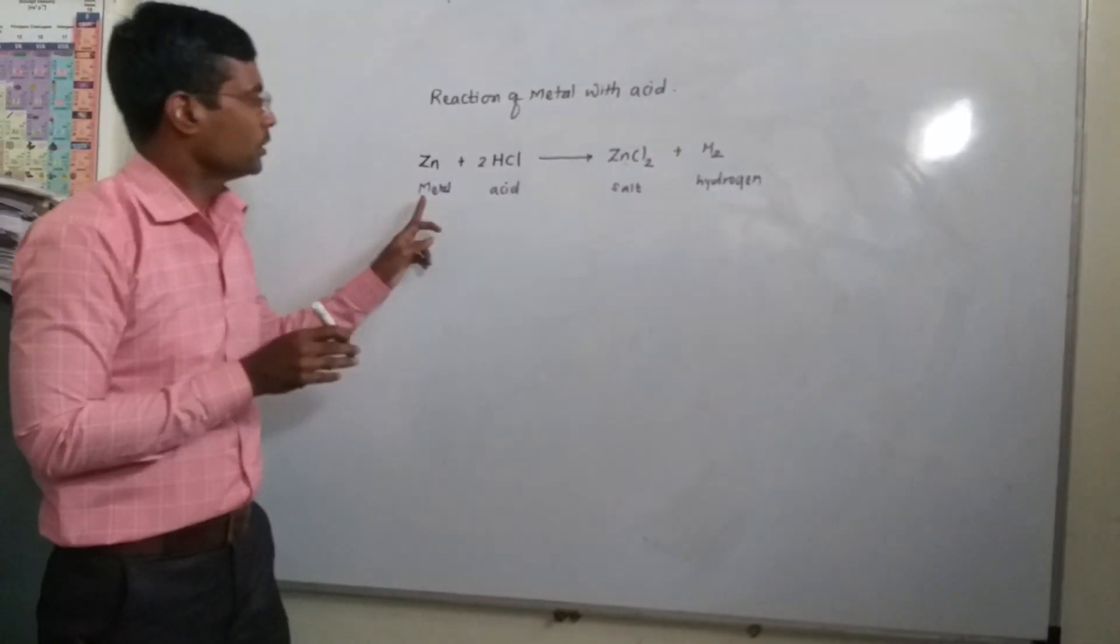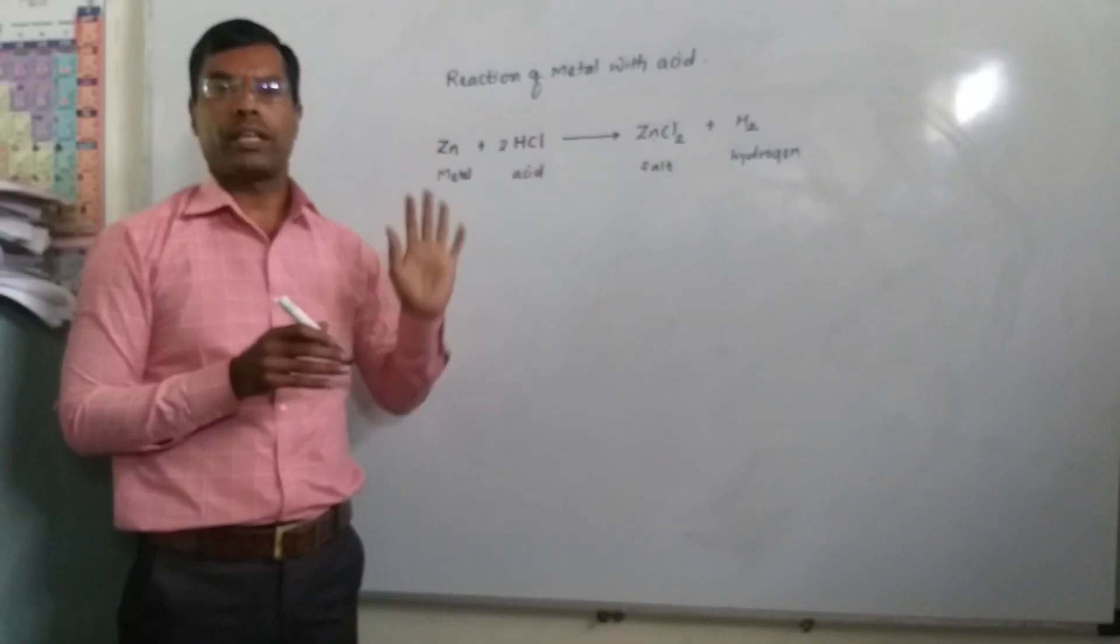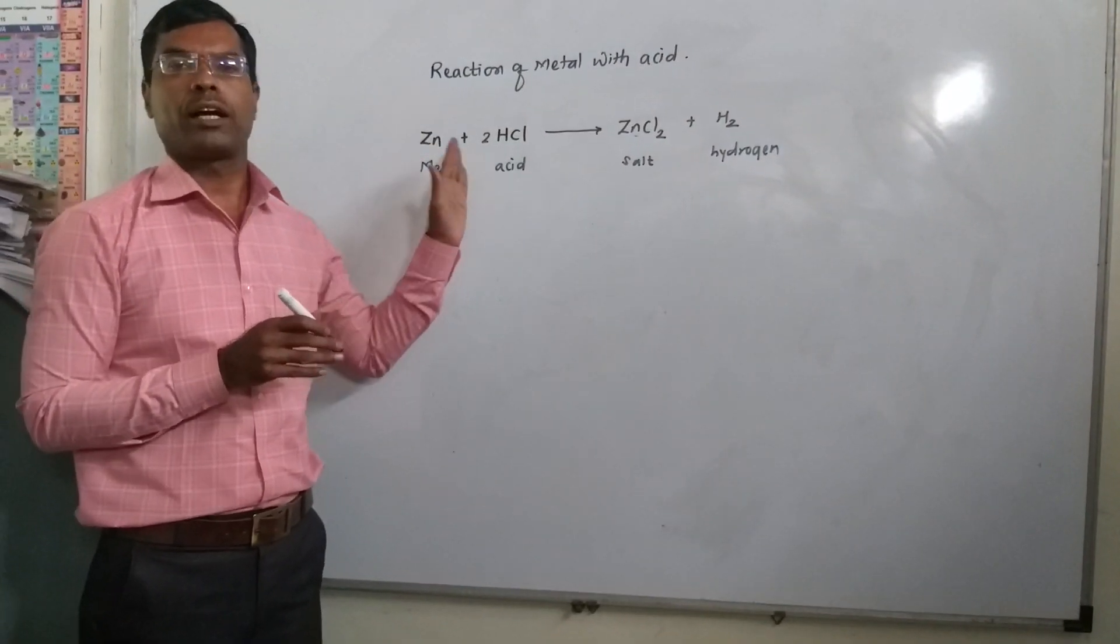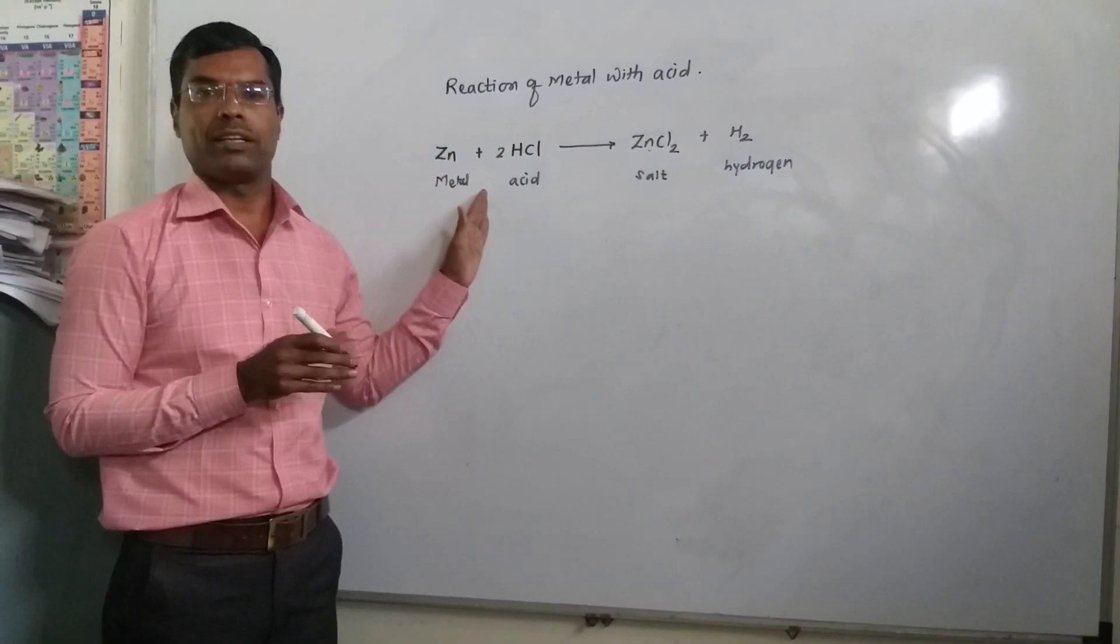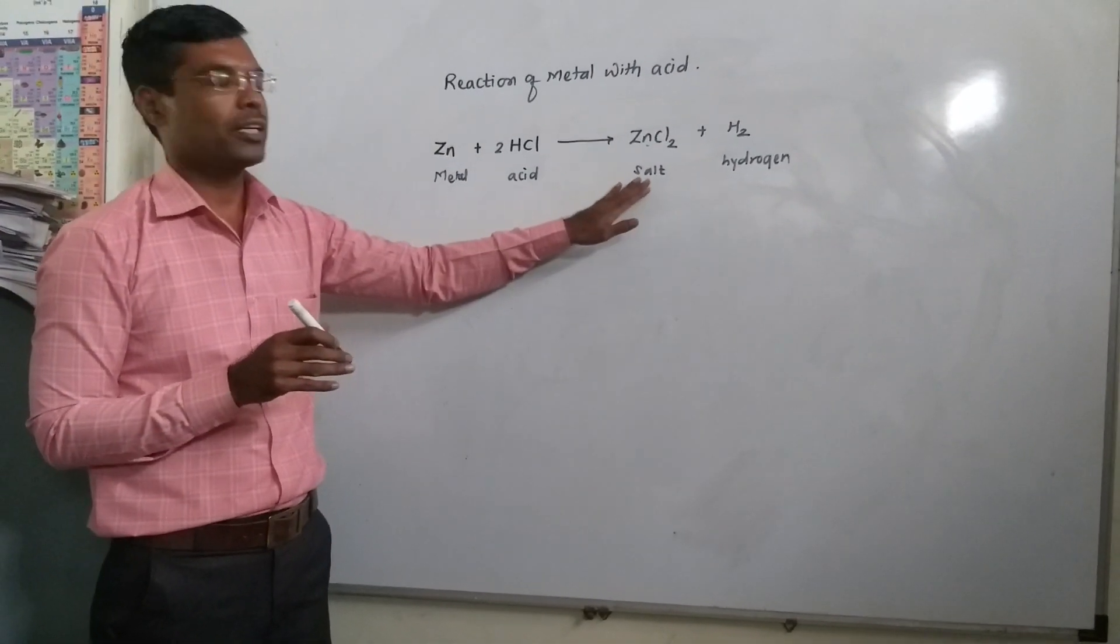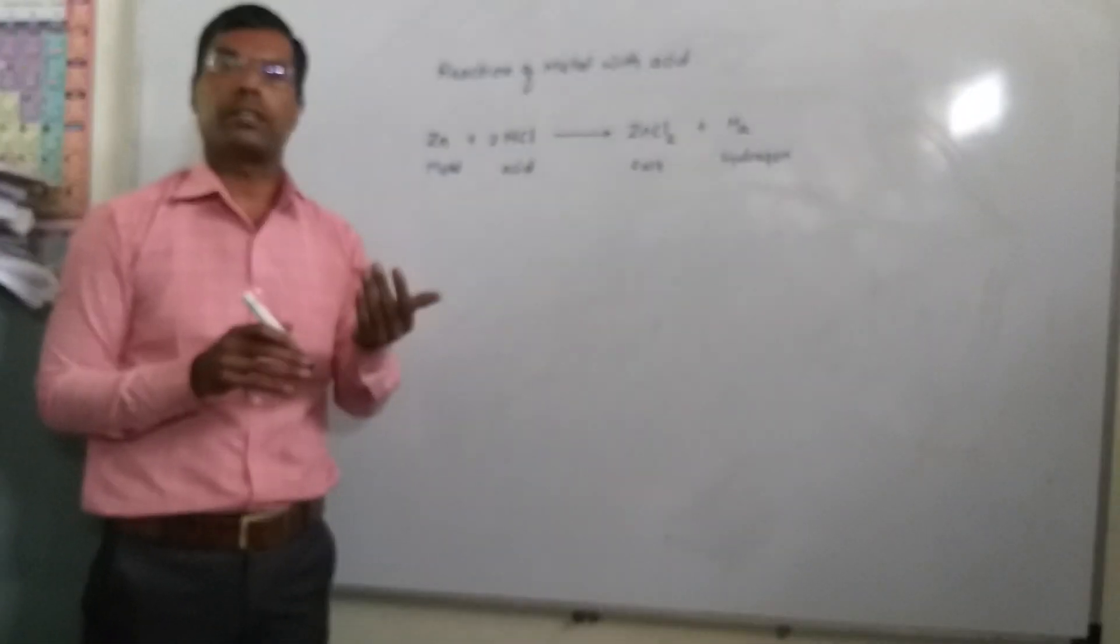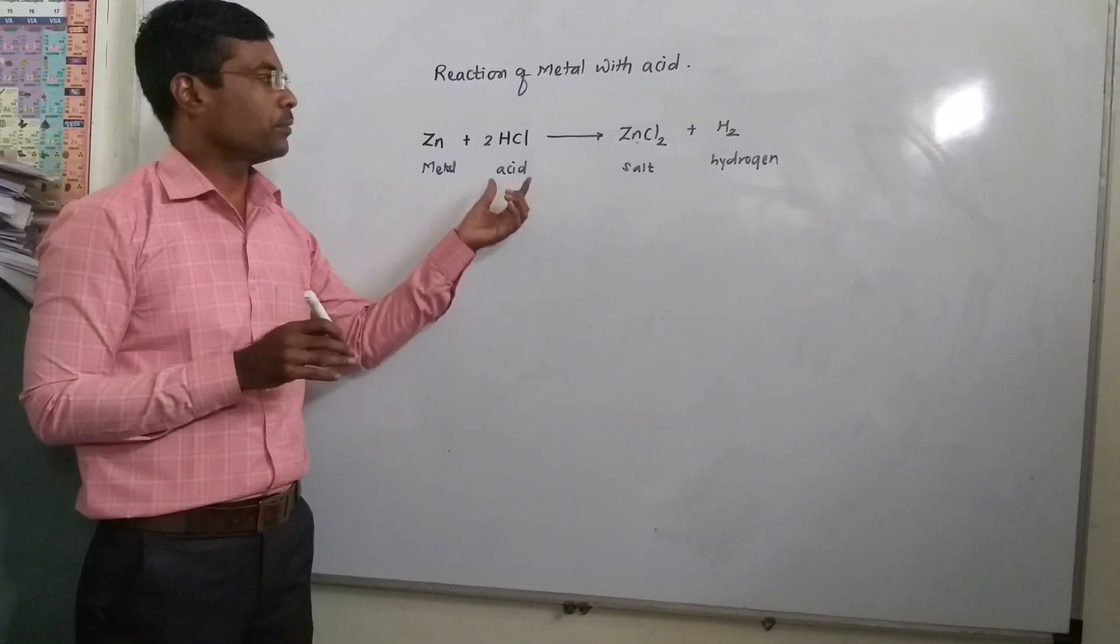You may take magnesium, you may take sulfuric acid and perform the reactions. You may take calcium with HCl. So calcium and hydrochloric acid also gives the salt calcium chloride and hydrogen. According to the reactivity of the metal, they react with different acids.